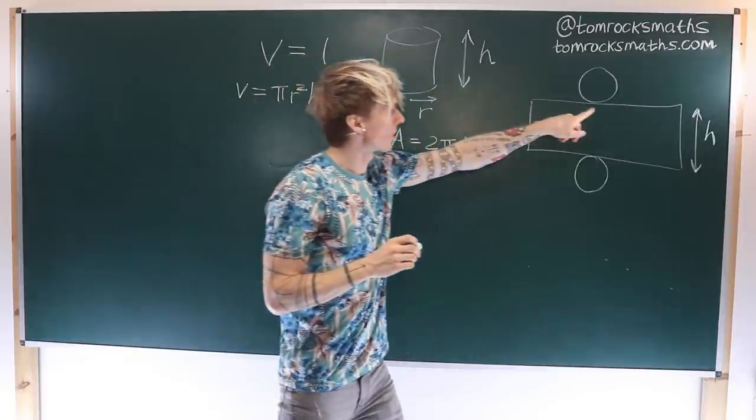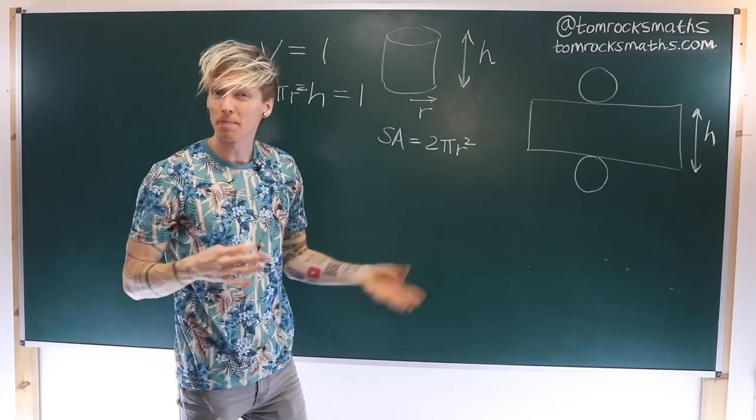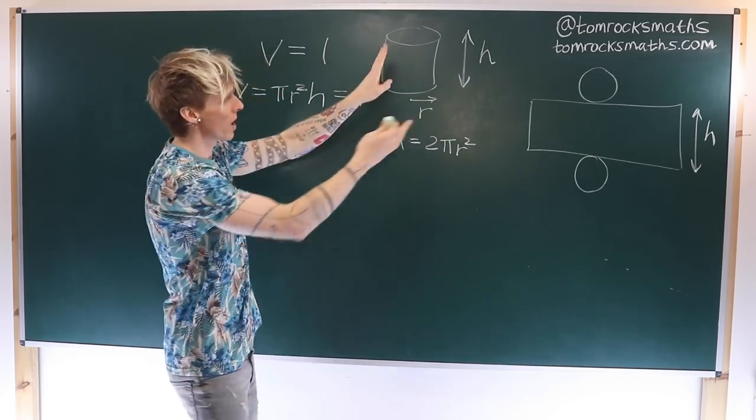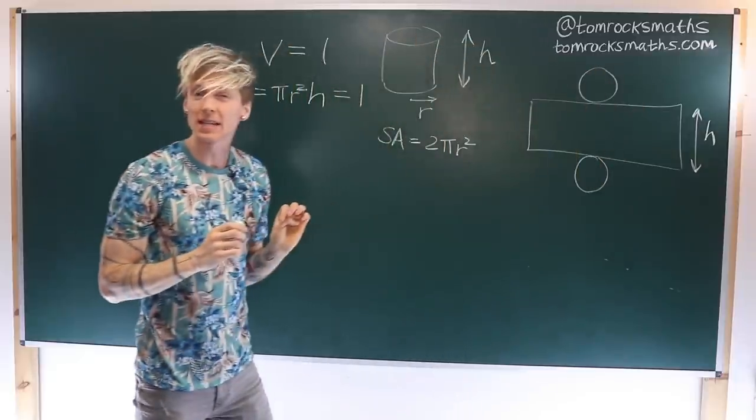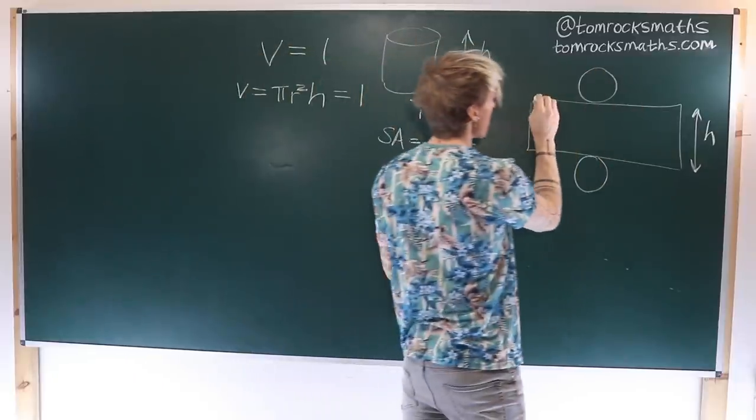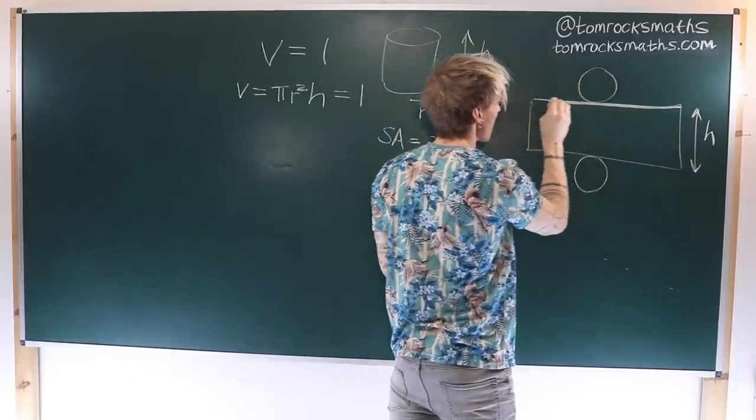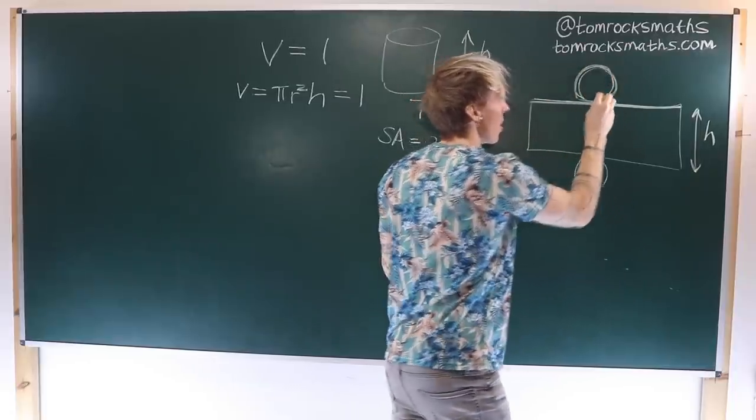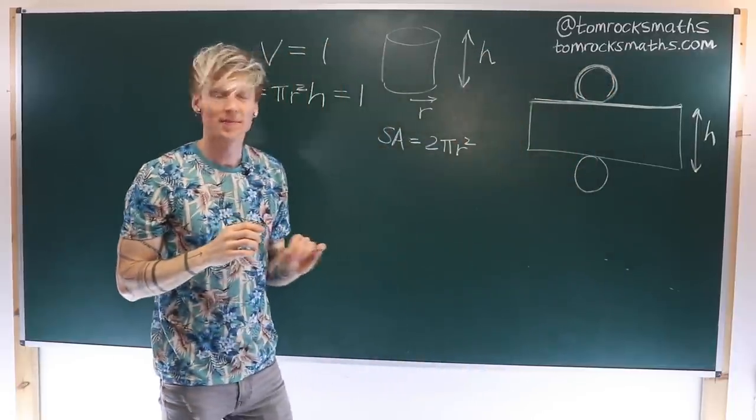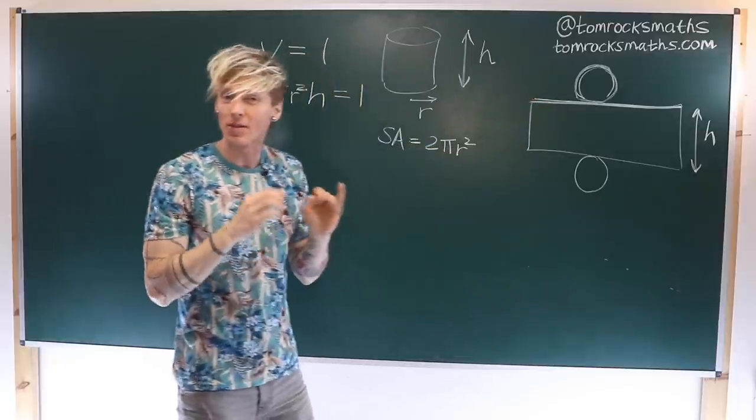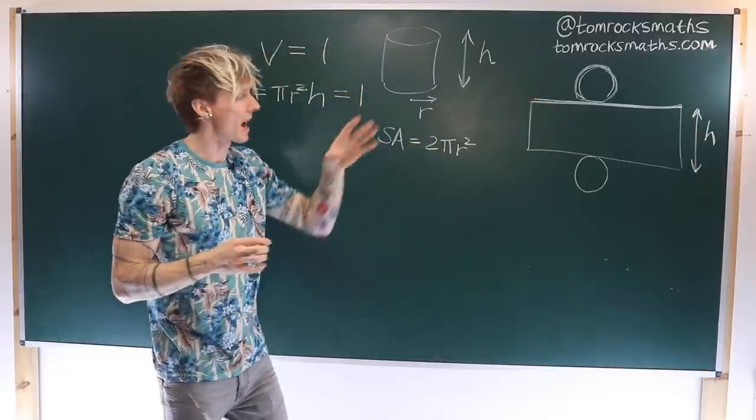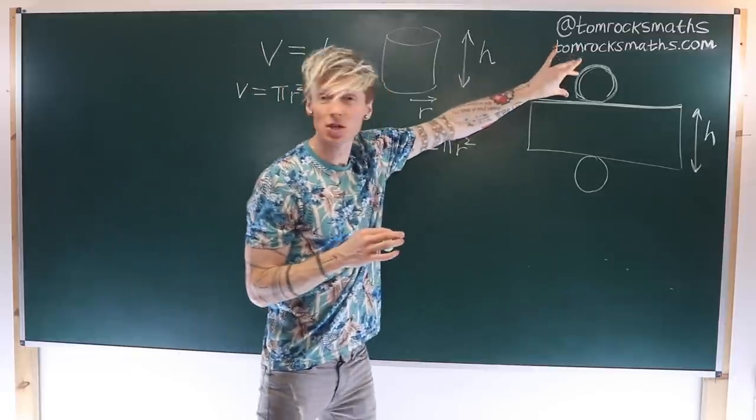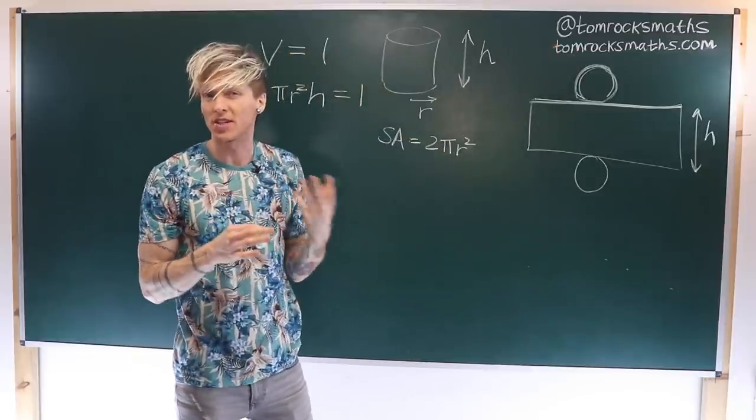Now the height of the rectangle is given by h because that's the height of the cylinder. But this length along the top, and of course the same on the bottom, we have to think a little more. When we roll this up to create our cylinder, this top edge is actually going to perfectly match with the edge of our top circle. So this length, the width of our rectangle, has to be equal to the circumference of this top face, the circumference of our circle.